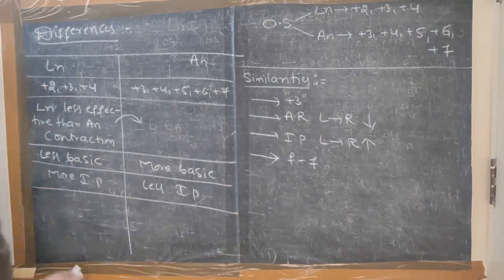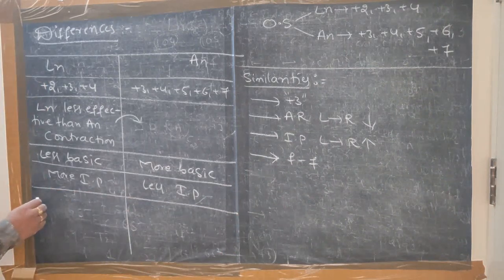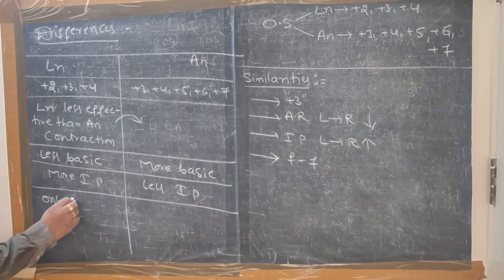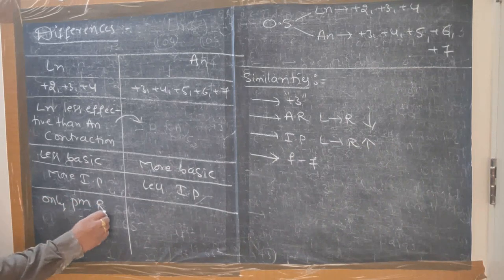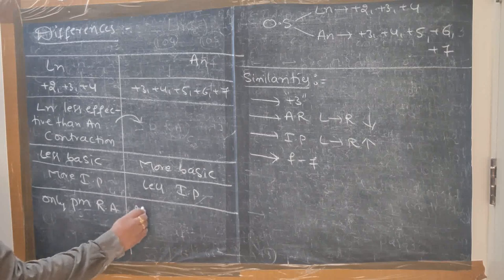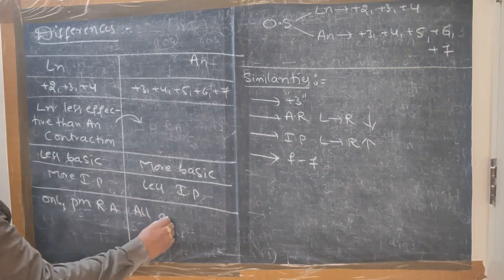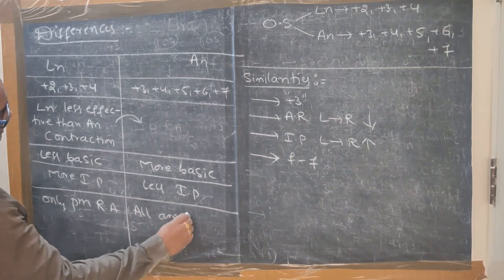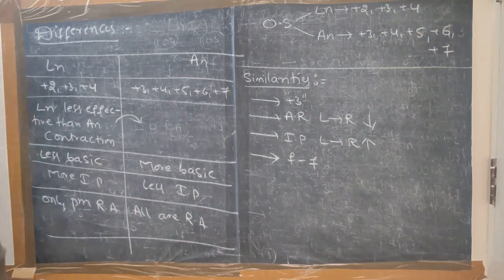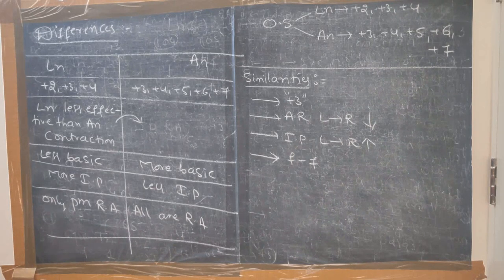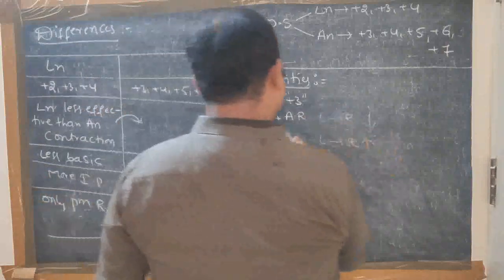Another difference: in lanthanides, only promethium is radioactive, whereas in actinides, all elements are radioactive. These are the key differences between lanthanides and actinides.